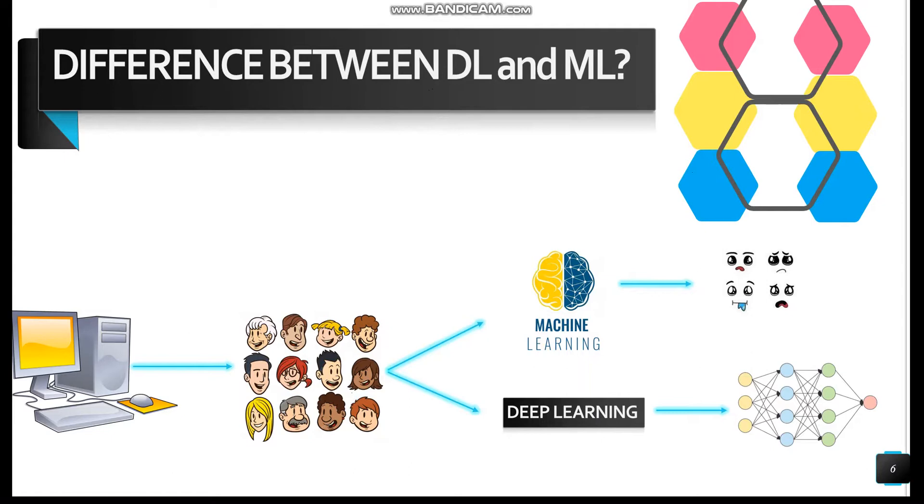If we solve this problem by using different machine learning algorithms, we will have to define facial features like eyes, nose, ears, etc. And then the system will identify which features are more important for which person.